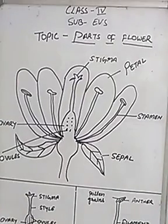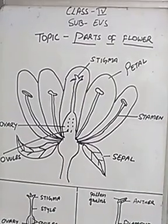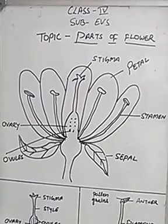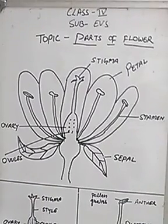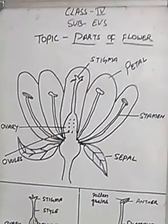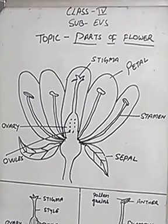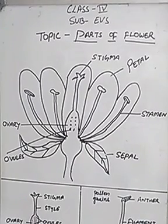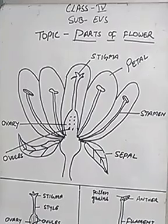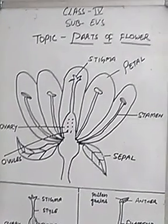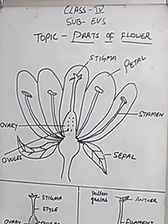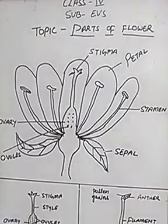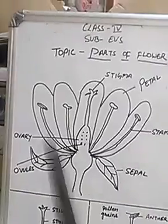Hello students, welcome back to my class. This video is for class 4, subject EVS, and today our topic is parts of flower. Have you seen flowers? Yes, all of you have seen flowers. It is the most attractive part of the flowering plant. You can observe the flowers of a plant and recognize the plant immediately — you can tell from flowers which plant it is.